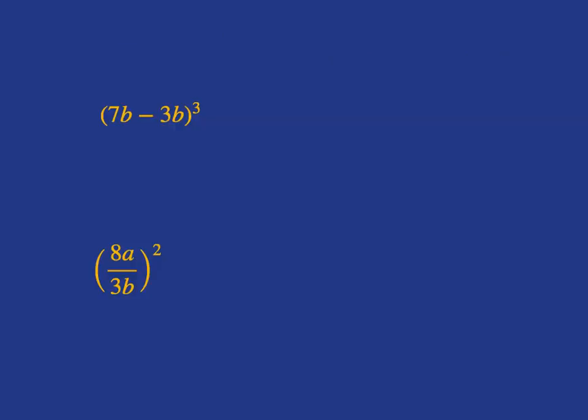So, a further example. If we want to do 7b minus 3b all cubed, because if we're adding or subtracting, we can't just apply the cubed to each term. We first need to combine like terms so that we get it to a single term.